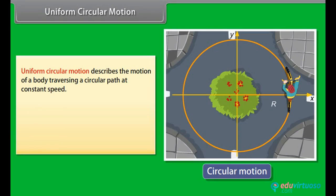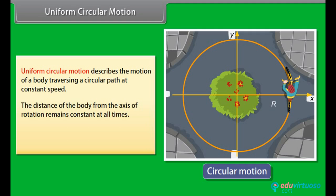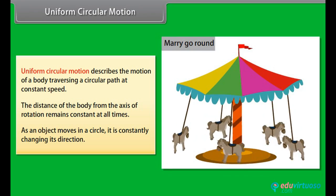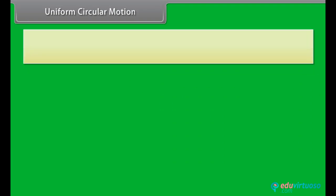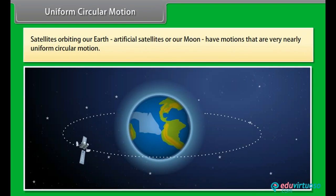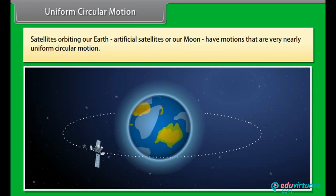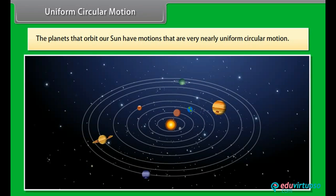Uniform circular motion describes the motion of a body traversing a circular path at a constant speed. The distance of the body from the axis of rotation remains constant at all times. As an object moves in a circle, it is constantly changing its direction. A merry-go-round is an example of uniform circular motion. Satellites orbiting the earth, artificial satellites, and the moon have motions that are very nearly uniform circular motion. The planets that orbit our sun also have motions that are very nearly uniform circular motion.